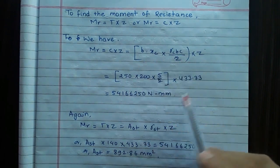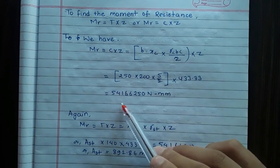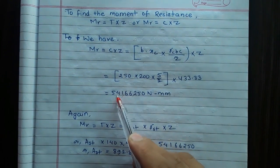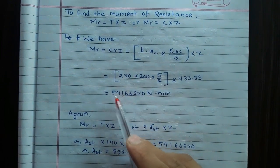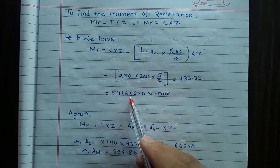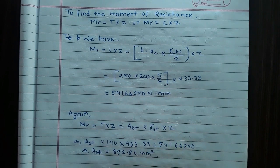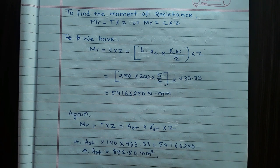Solving the problem: MR = 54,166,250 N·mm. Now to find the area of steel in tensile force using MR = T × Z.